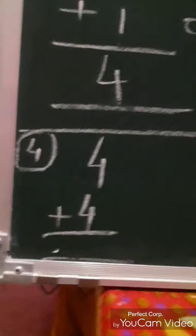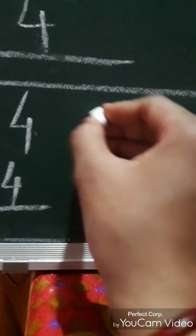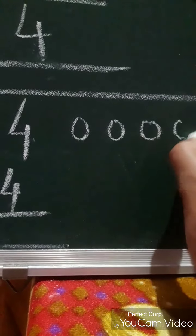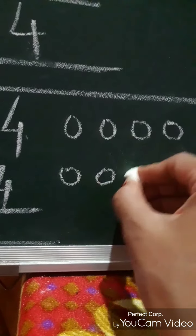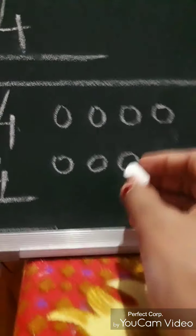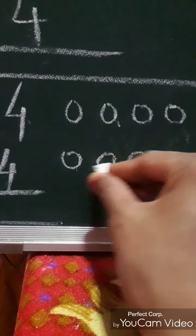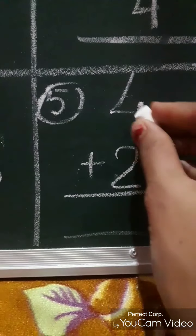After this we move to sum number four. Upside four is written, so we draw four circles. Downside also there is number four, so we draw four more circles. After drawing, we start our counting: one, two, three, four, five, six, seven, eight — so the number eight is the answer for this sum.